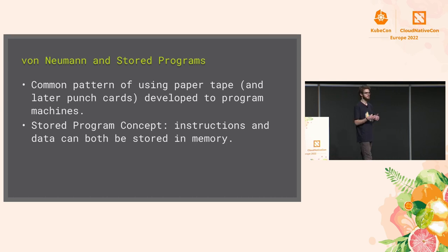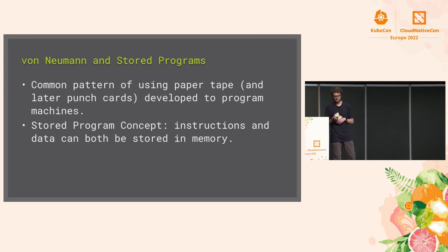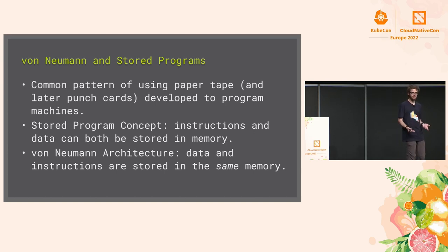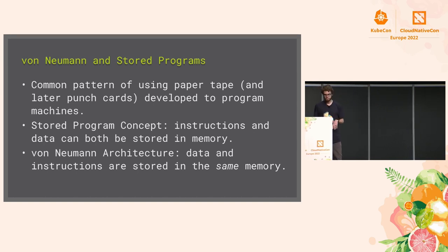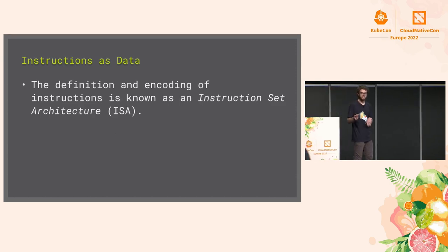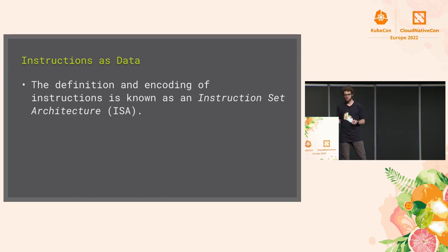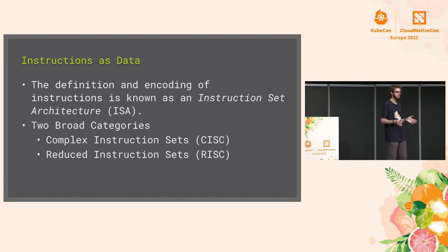What von Neumann realized when working on the EDVAC — the successor to the ENIAC — was that we could store instructions not on paper tape but in memory, just like our data, and in the same memory as our data. This became known as the stored program concept — the foundation of computing today. It's why you can write code, compile it, store it in memory, and run it as an executable.